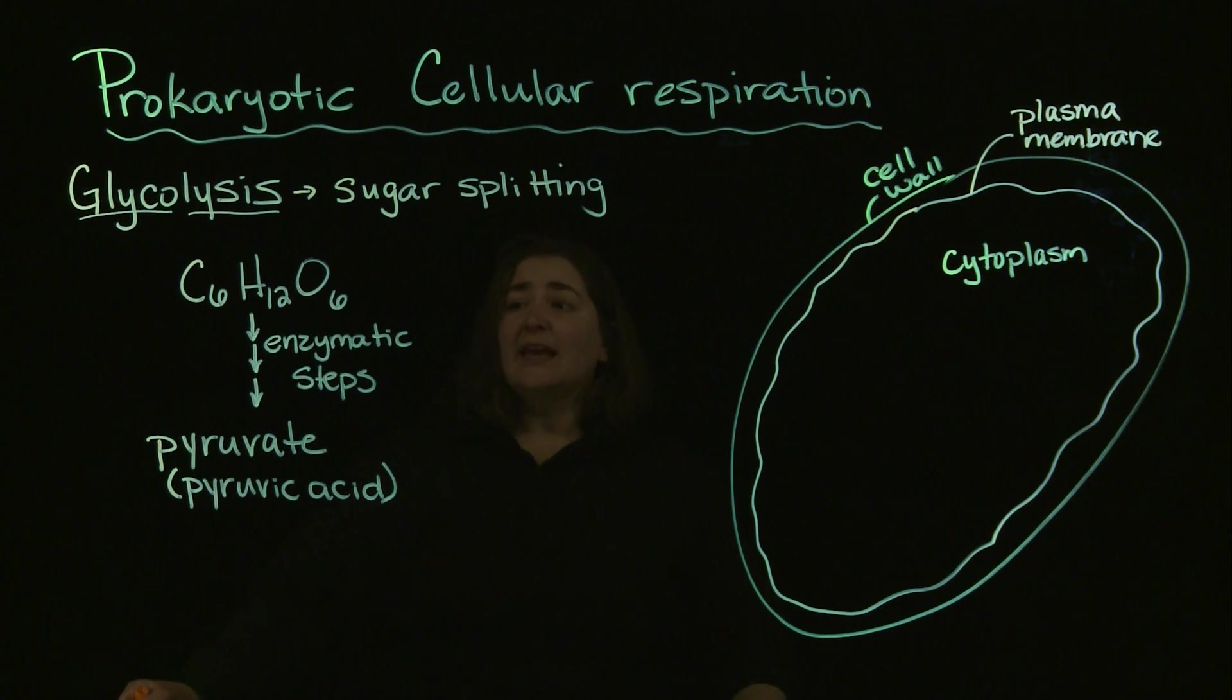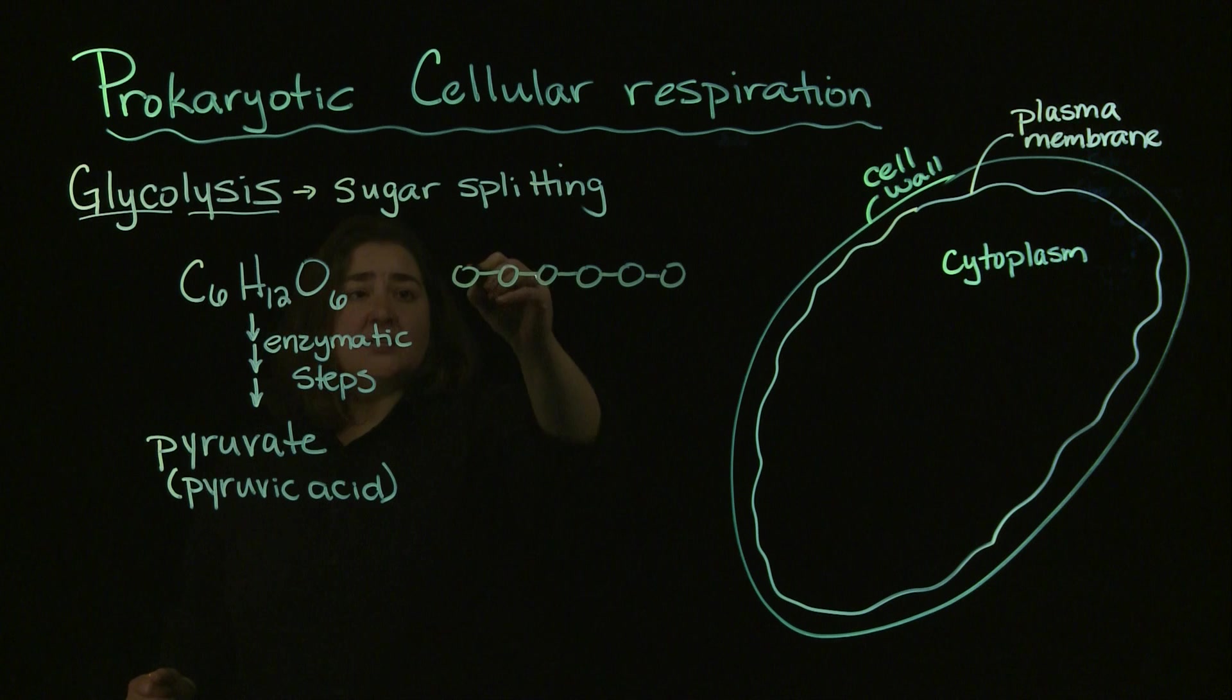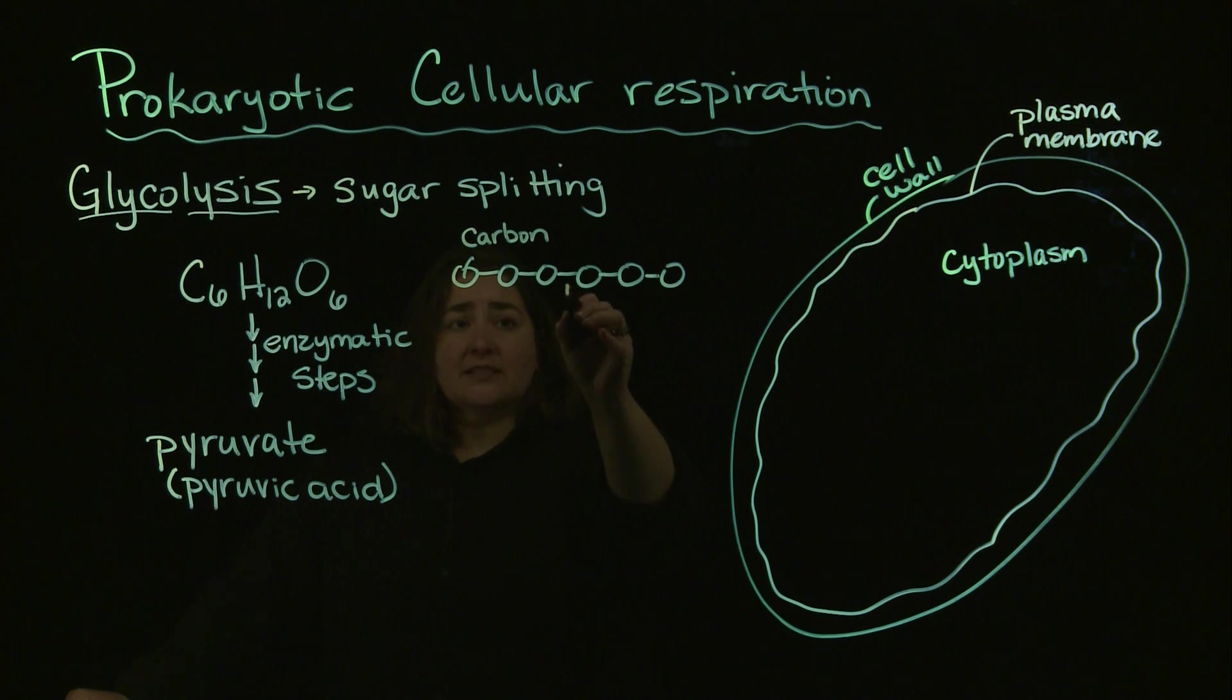Essentially what we're doing with that sugar, I'm going to draw this as just round balls. Each of these round balls represents a carbon. With sugar, you've got a six-carbon molecule. What's going to happen with those enzymatic steps, they're going to break the bonds between those sugars and generate two, three-carbon molecules.